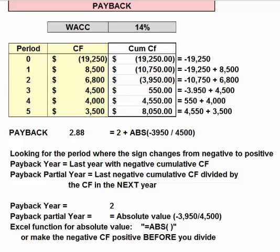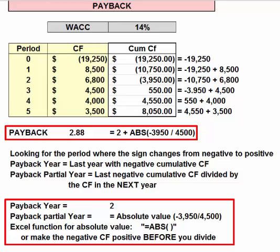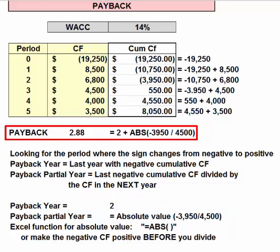So the payback year is the year with the last negative cumulative cash flow — year two. The partial year is found as the absolute value of −$3,950 over $4,500: how far into year three do we have to go to cover that last $3,950? That gives 0.88, so the payback is 2.88 years.